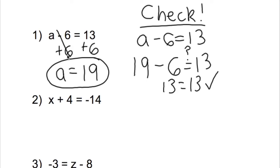Second one: x plus 4 is equal to negative 14. Once again, we have to get the variable by itself — in this case, isolate x. We have x plus 4 happening right now. In order to get x by itself, we have to do the opposite operation, which is plus 4. The opposite of adding 4 is subtracting 4.